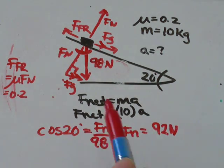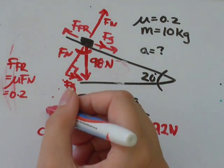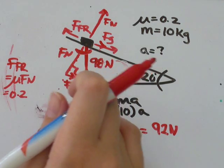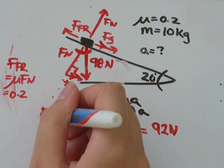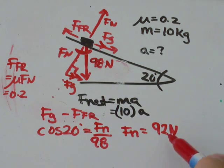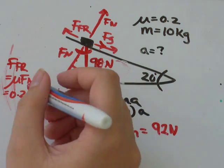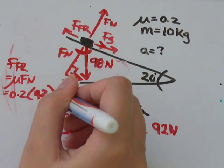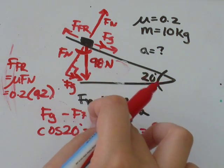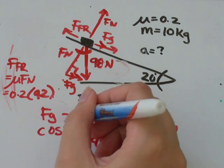So remember, our Fnet was the difference between the force of gravity and the force of friction. So force of friction was mu Fn. Fn was 92, and our mu was 0.2. So 92 times 0.2, I get that's equal to about 18.5. So force of friction was 18.5.